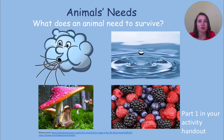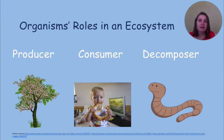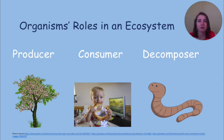Food provides animals with the energy they need to survive. Organisms obtain energy in different ways. An ecosystem consists of living organisms such as plants and animals and non-living organisms like water, rocks, and sunlight. All living organisms need energy in order to live. Depending on how an organism gets its energy, it will be classified as a producer, consumer, or decomposer.